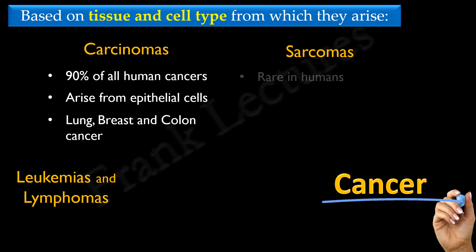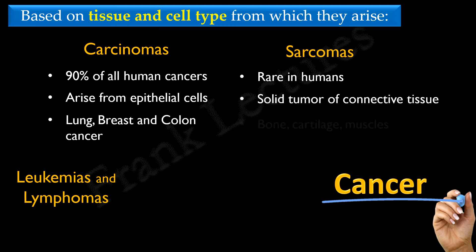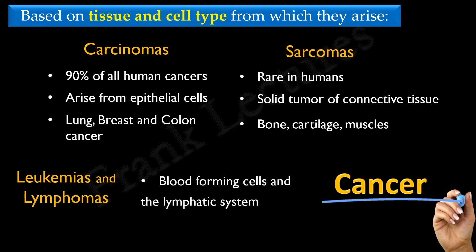Sarcomas are rare in humans. They are solid tumors of connective tissue such as bone, cartilage, and muscle. Leukemias and lymphomas are cancers derived from blood-forming cells and the cells of the immune system. Approximately 7% of human cancers belong to this category.